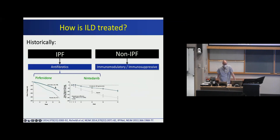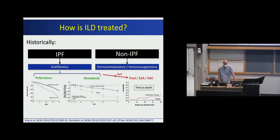Pirfenidone and nintedanib essentially slow the rate of lung function decline — they don't stop it, but on average they reduce lung function decline by about 50%. Over 52 weeks, placebo shows greater FVC decline compared to treated patients with pirfenidone or nintedanib. We also know from a 2012 study that prednisone, azathioprine, and NAC are actually harmful in IPF — showing a much higher rate of death compared to placebo. These drugs actually kill people with IPF and are no longer used for long-term IPF management. Most of the harm seems associated with higher doses of prednisone used early in that study.